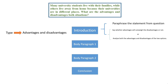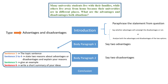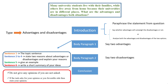In body paragraph 1, after saying the topic sentence, talk about two advantages. In body paragraph 2, after saying the topic sentence, talk about two disadvantages. Each body paragraph should contain these sentences: Sentence 1 is the topic sentence. Sentences 2 to 4 state two reasons about advantages or disadvantages and explain your reasons. Sentence 5 gives an example. Sentence 6 is a short summary of your ideas.